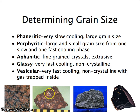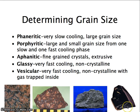Then you have aphanitic, which is a fine-grained crystal — extrusive. And then you have glassy, which is very fast cooling and non-crystalline. The last one is vesicular, which tends to have holes in it. It's very fast cooling, non-crystalline, and gas is typically trapped inside, so it looks like it has holes within the rock structure.